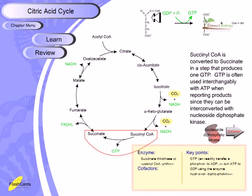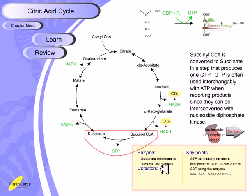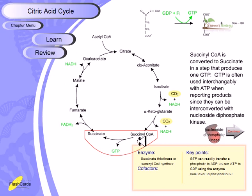The enzyme responsible for this step is called succinate thiokinase, or succinyl-CoA synthase. Although the name seems odd since succinyl-CoA is already synthesized and is now being broken down into succinate, the enzyme retains this name. Unlike most reactions in the cycle which are bidirectional, this is a monodirectional reaction. The GTP produced can readily transfer its phosphate to ADP, and ADP can transfer to GDP, utilizing the enzyme nucleoside diphosphate kinase.